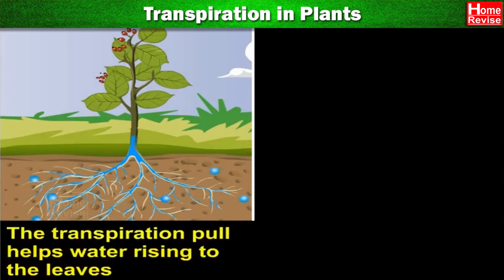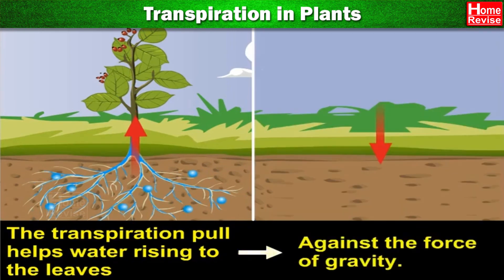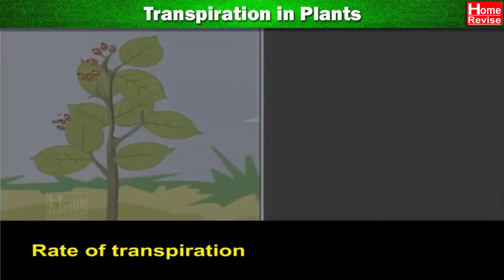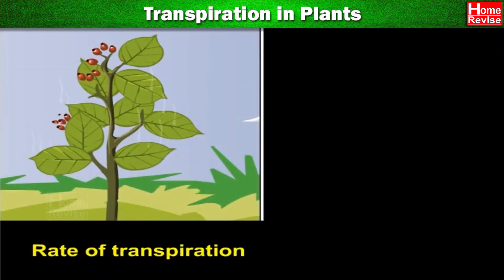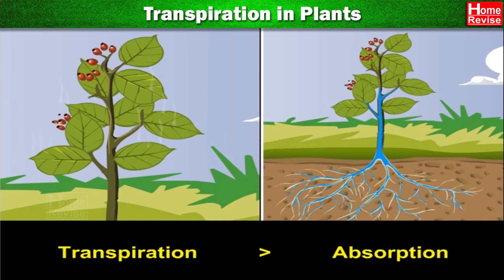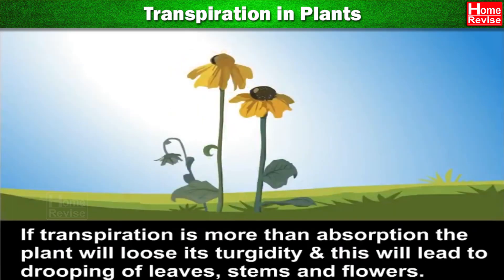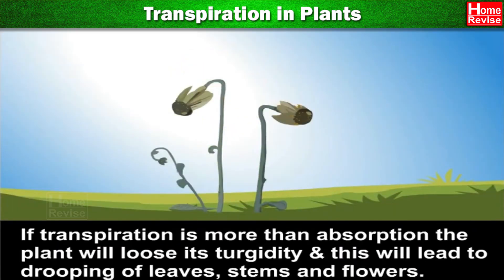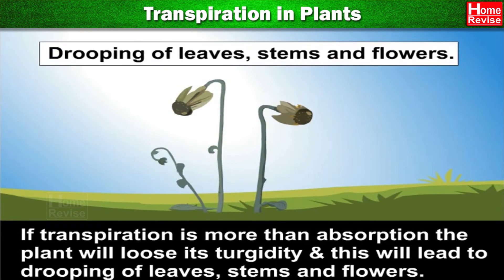Transpiration is very important to plants as the transpiration pull helps water rise to the leaves against the force of gravity. As the rate of transpiration increases, so does the rate of absorption of water. If transpiration is more than absorption, the plant will lose its turgidity and this will lead to drooping of leaves, stems, and flowers.